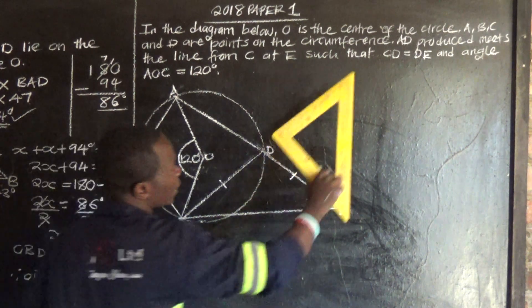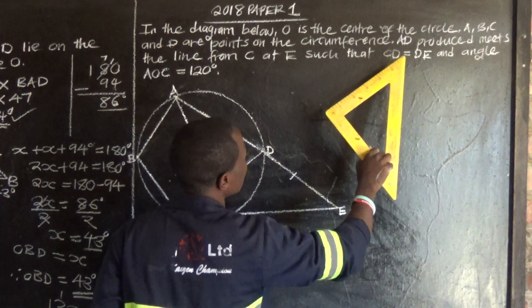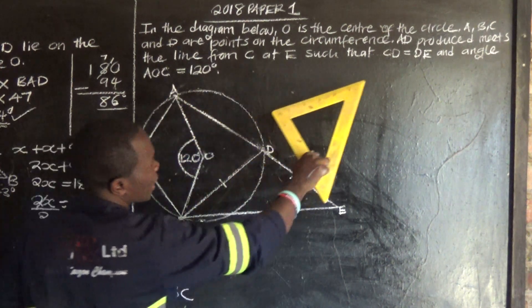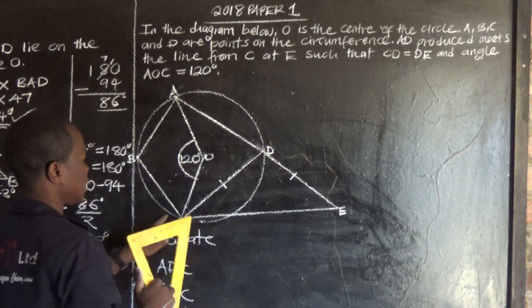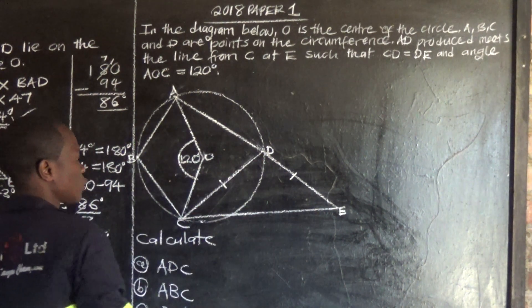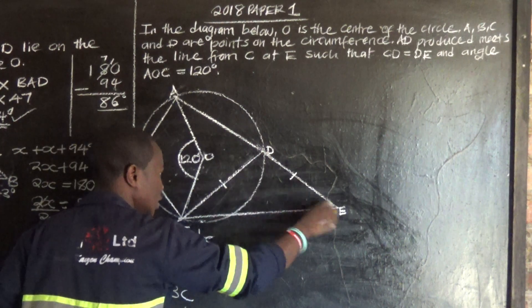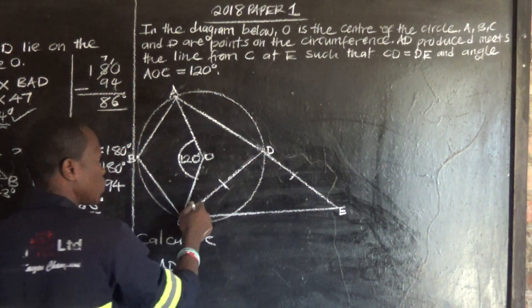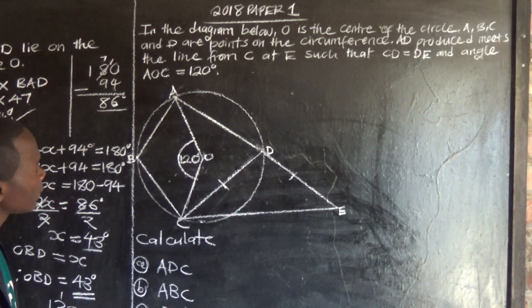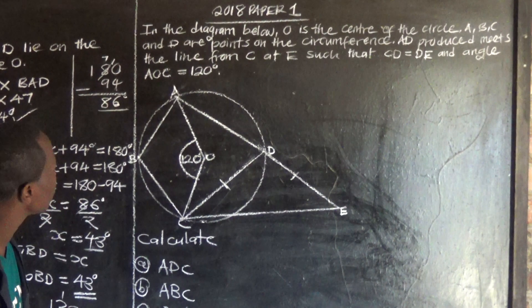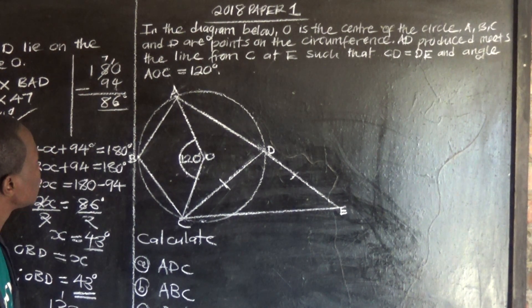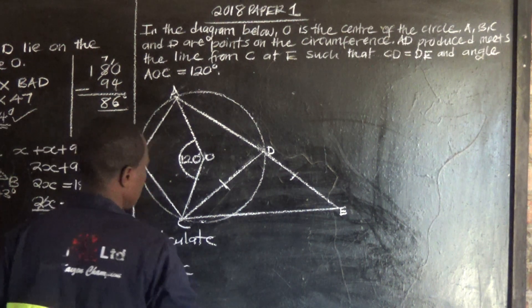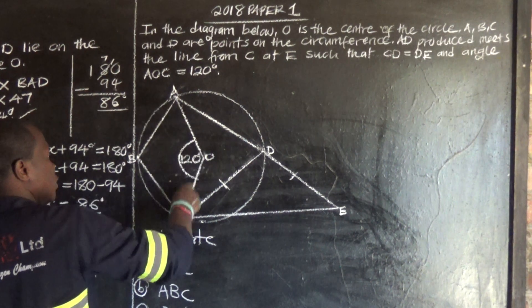Now, A, D meets the line from C at E, such that C, D is equal to D, E. So CD and DE are equal. And angle A, O, C is equal to 120 degrees.